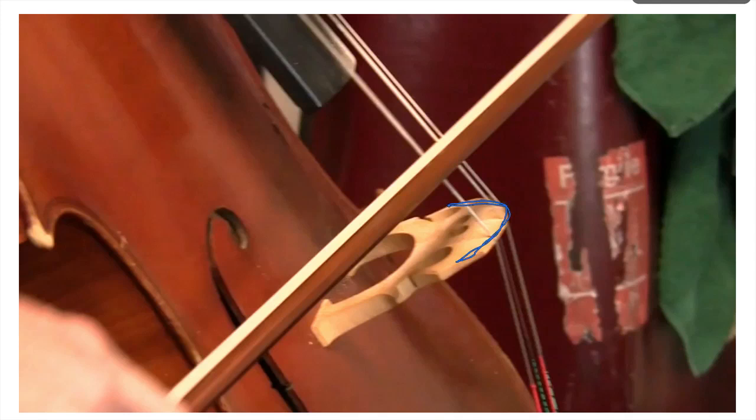And the reason the bridge on a cello or a violin is curved is so that when you are bowing a string, you can bow an individual string without touching any of the others. So here, we're going to bow one of the cello strings.